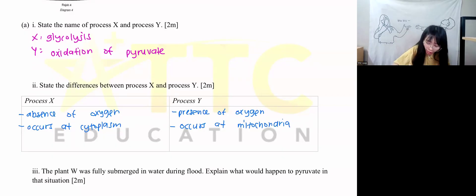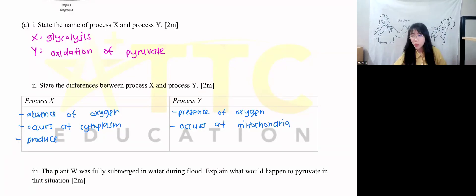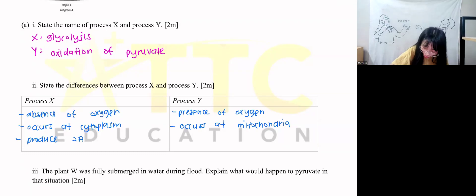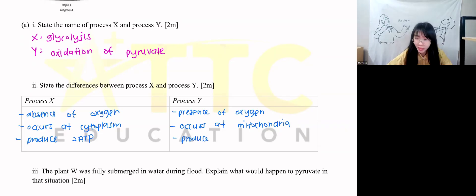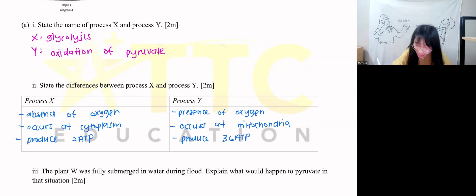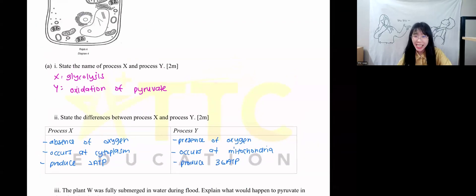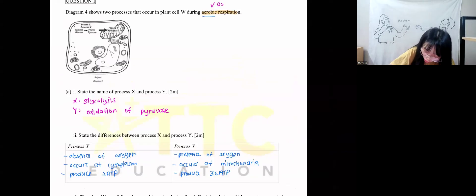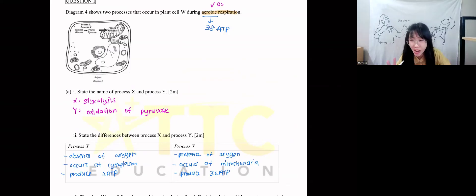We can also talk about energy production. For process X, when there is no oxygen, only 2 ATP are produced. For process Y, the answer is not 38 — it's 36 ATP, because oxidation of pyruvate produces only 36. We write 38 ATP when the question refers to the full aerobic respiration. This is a very common mistake made by students because they forgot to read the question and always write 38 instead of 36.